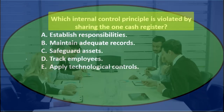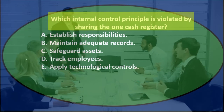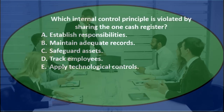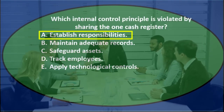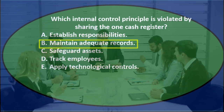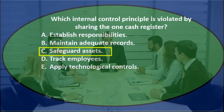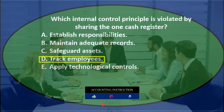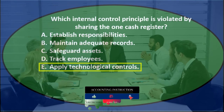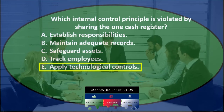Next question: which internal control principle is violated by sharing one cash register? A. Establishing responsibility. B. Maintain adequate records. C. Safeguard assets. D. Trace employees. E. Apply technological controls.